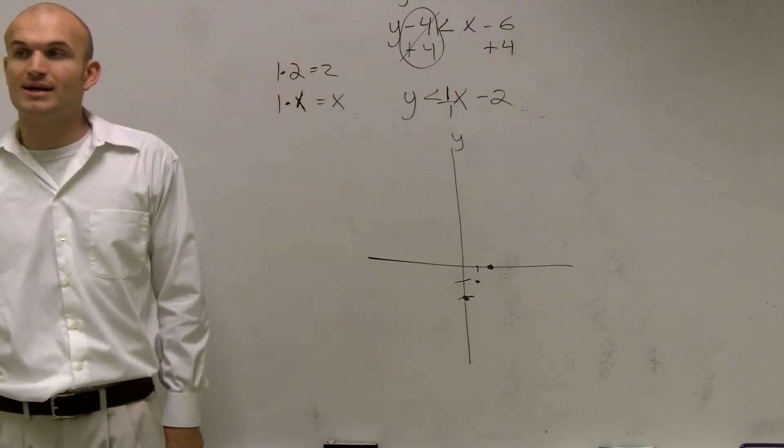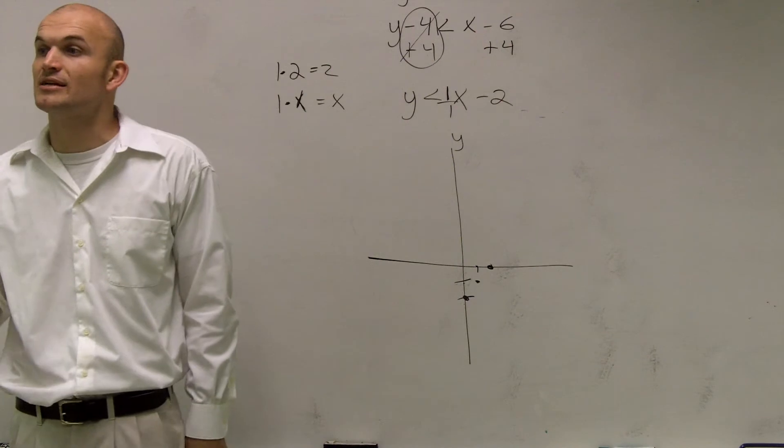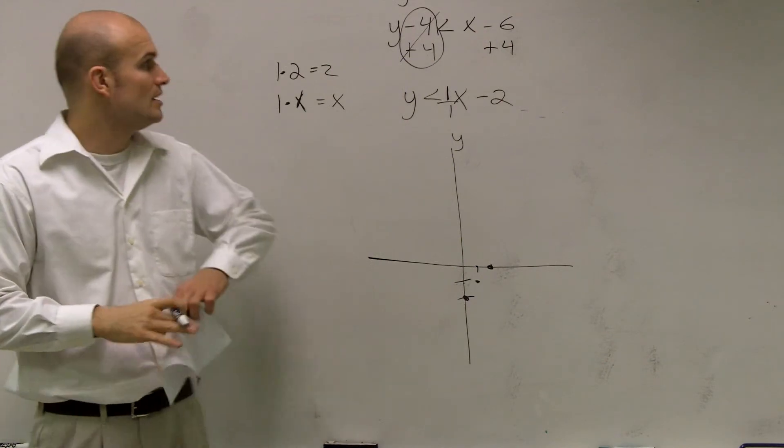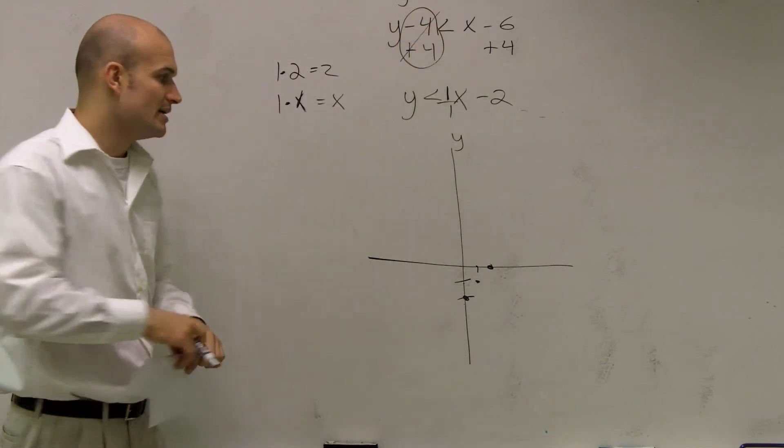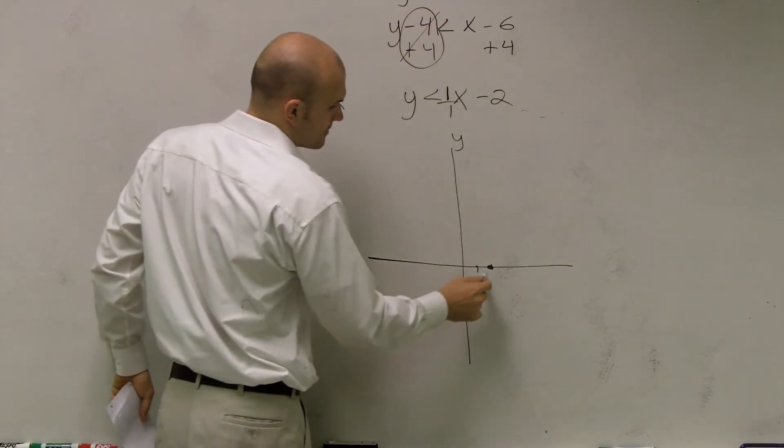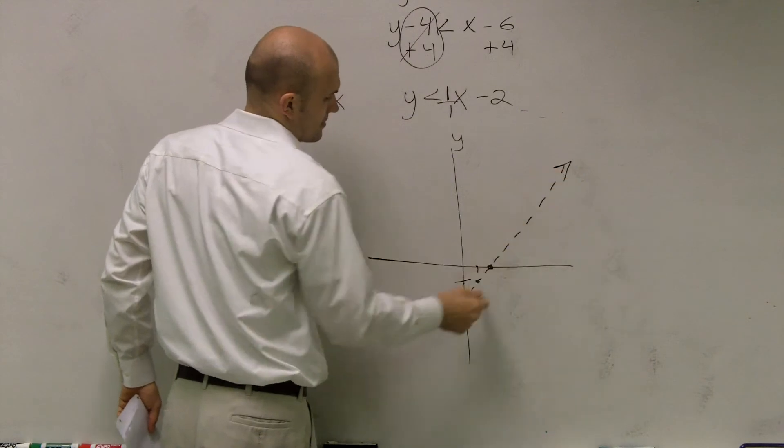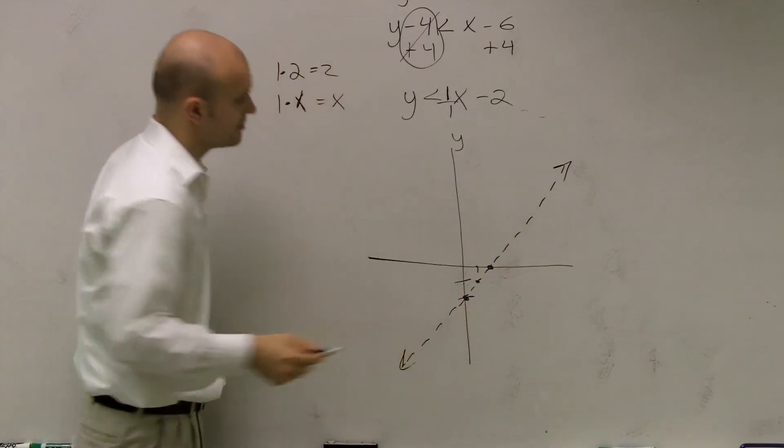All right? Then, before I connect my points, you've got to make sure, is it going to be a dashed or a solid line? So we look at the inequality, and we say, all right, since it's less than and not less than or equal to, it's going to be a dashed line.